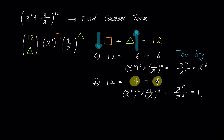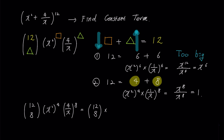It seems we have found the value we need. Now let's find the answer. Putting 4 into square and 8 into triangle, it becomes 12C8 times (x^2)^4 times (4/x)^8, which can be written as 12C8 times x^8 times 4^8 over x^8. Canceling out x^8 in the numerator and denominator, the answer is 12C8 times 4^8.